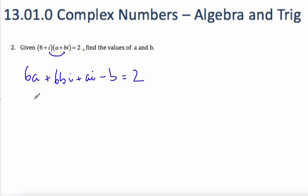So if I rearrange this now, I know that 6a minus b plus, I'm going to factor out i here, 6b plus a equals 2. Well, what's not written here is plus 0i.